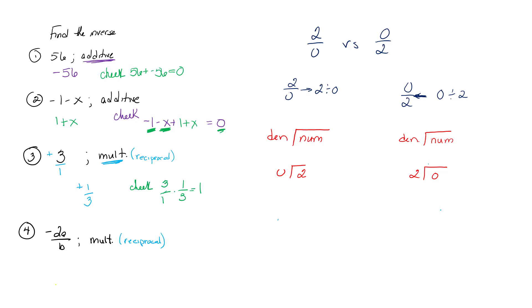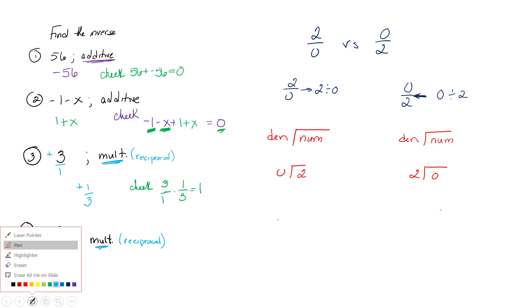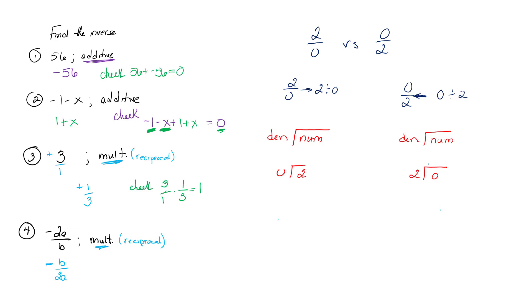Now the fourth one is asking for the multiplicative inverse of negative 2a over b. Remember, the sign stays the same on the multiplicative inverse — the only thing moving is the numerator and denominator switching places. Which means in this case I get negative b over 2a. The check: negative 2a over b multiplied by its multiplicative inverse, negative b over 2a, cancels out to give a positive 1.